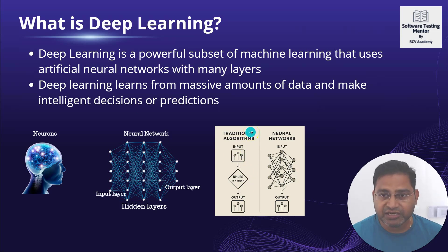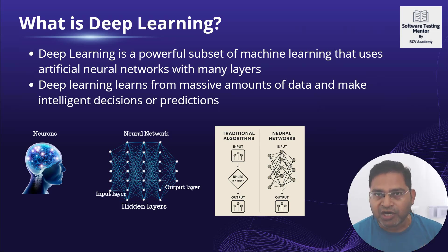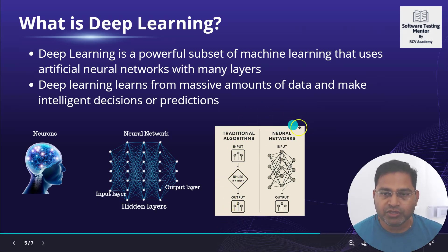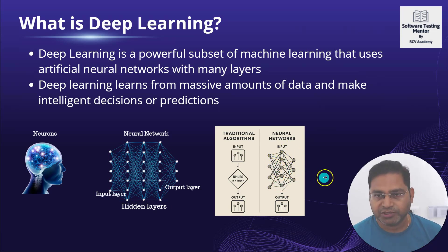The core concept of deep learning is that when machine learning is done using artificial neural networks, that is deep learning. In traditional algorithms, you had input, predefined rules, and an output. In a neural network, you have input and output layers, with hidden layers in between that process and learn from the large dataset fed into the algorithms — making neural networks far more powerful than traditional approaches.